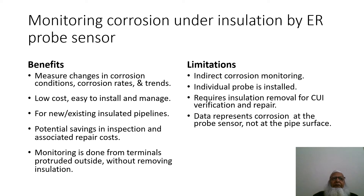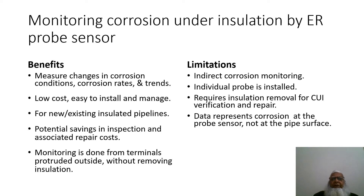Benefits of the ER probe sensor: measures changes in corrosion conditions, corrosion rates, and trends; low cost, easy to install and manage; applicable to new and existing insulated pipelines; potential savings in inspection and repair costs; monitoring is done from terminals protruding outside without removing insulation. Limitations: it is indirect corrosion monitoring using a probe; requires insulation removal for physical verification and repair; data represents corrosion at the probe sensor, not at the pipe surface.